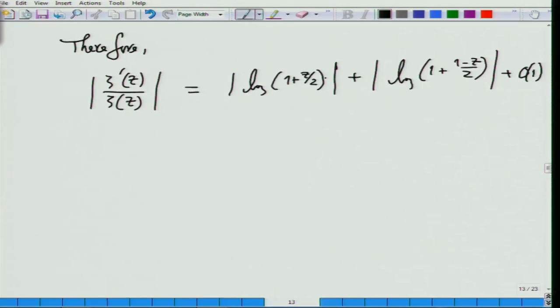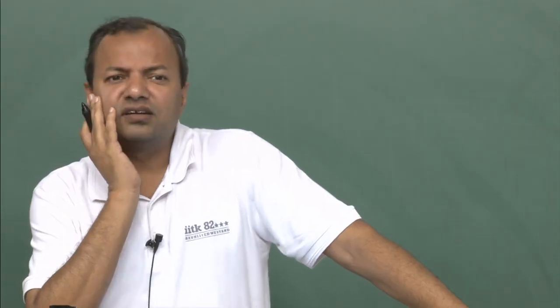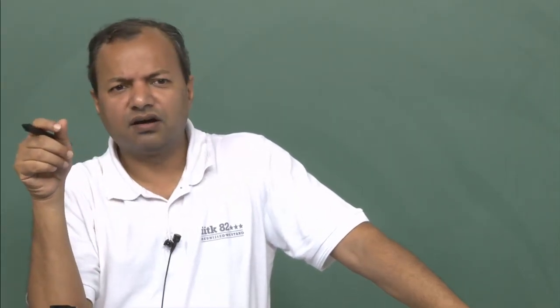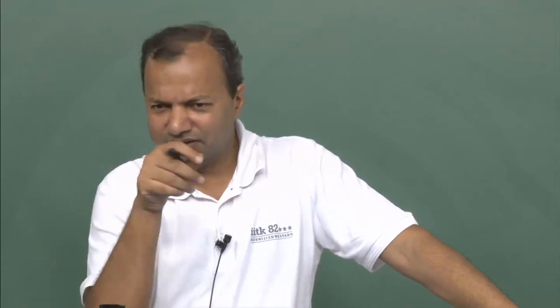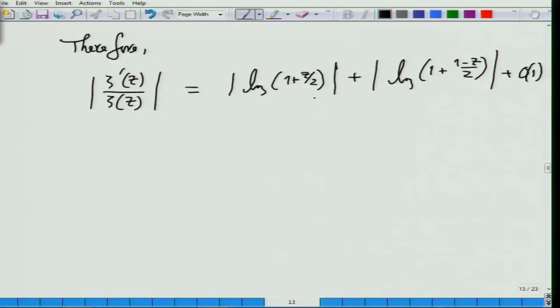So we can write: log of 1 plus z by 2 — this is what we get for gamma prime z over gamma z. And for gamma prime of z by 2 and gamma prime of 1 minus z by 2, we get log of 1 plus 1 minus z by 2, plus order 1. Now if you recall, the absolute value of log z for z written in polar coordinates as r times e to the i·theta, with theta varying between minus pi and plus pi — for the z of interest, theta is never equal to minus pi.